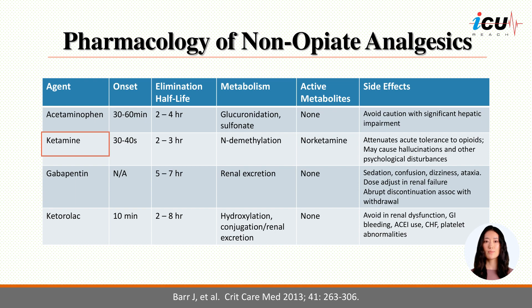Ketamine is an NMDA receptor-blocking agent and a dissociative anesthetic with neurostimulatory side effects. Low doses of ketamine can attenuate tolerance to opioids, and the PADIS guidelines recommend use of low-dose ketamine — 1 to 2 micrograms per kg per minute — to reduce opioid requirements. Gabapentin and other neuropathic pain medications should be used for neuropathic pain management. Gabapentin has a high affinity for voltage-gated calcium channels located presynaptically and may modulate the release of excitatory neurotransmitters. Uptitrate slowly as it can cause increased sedation.